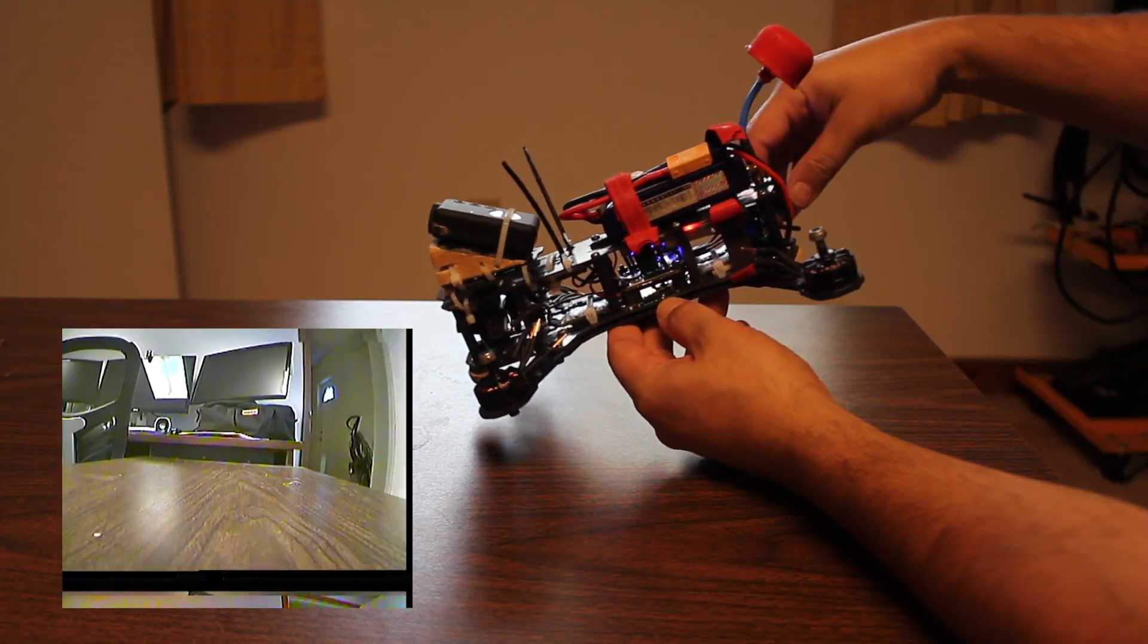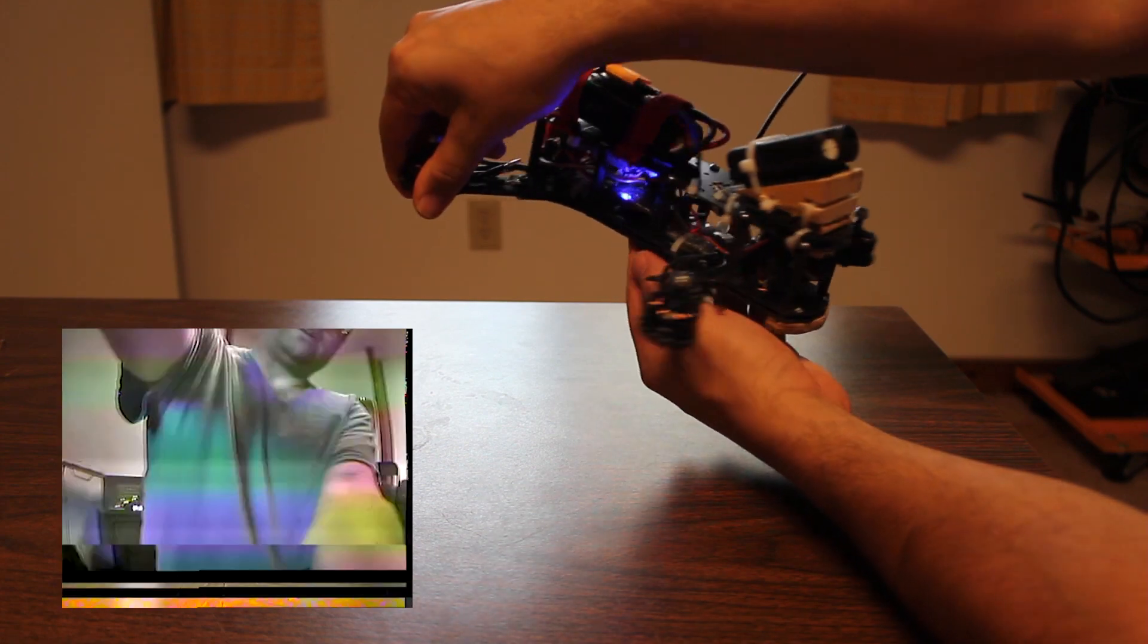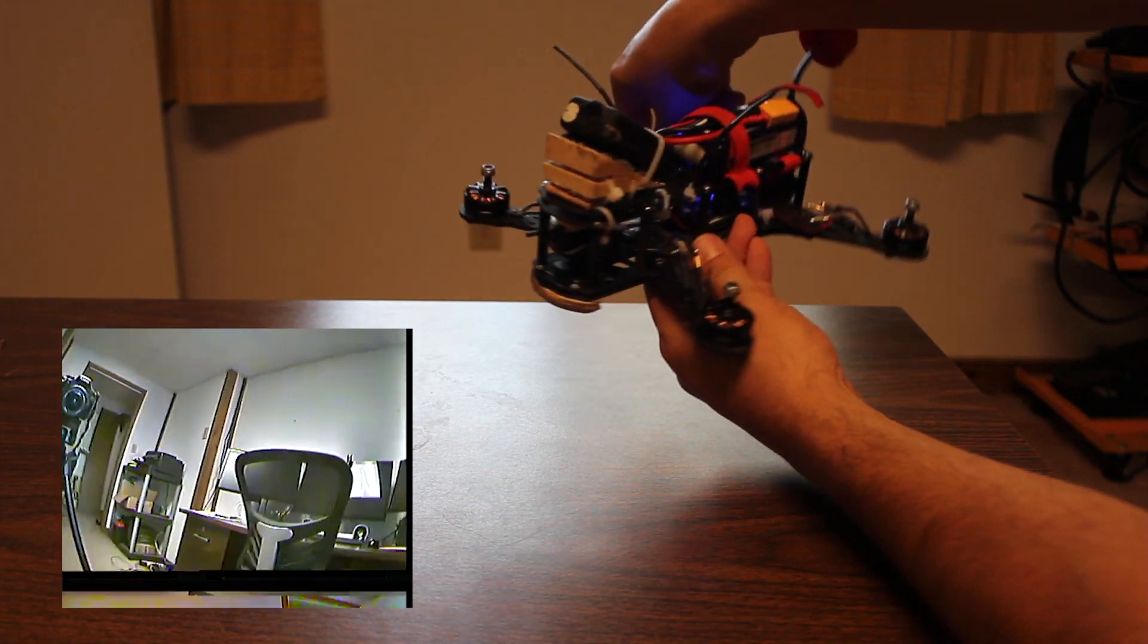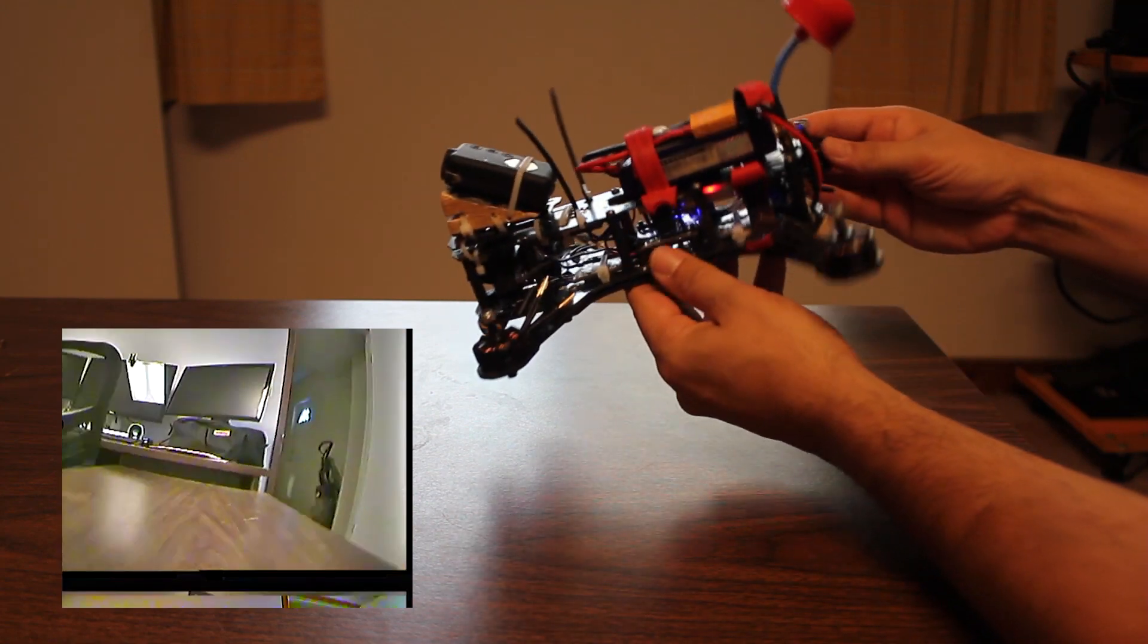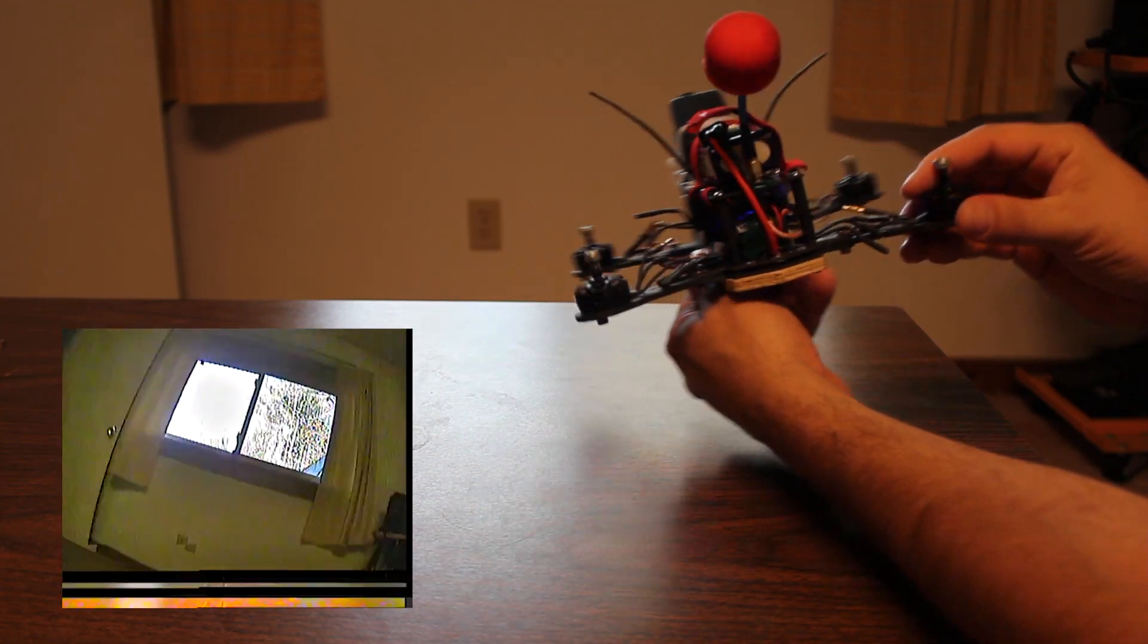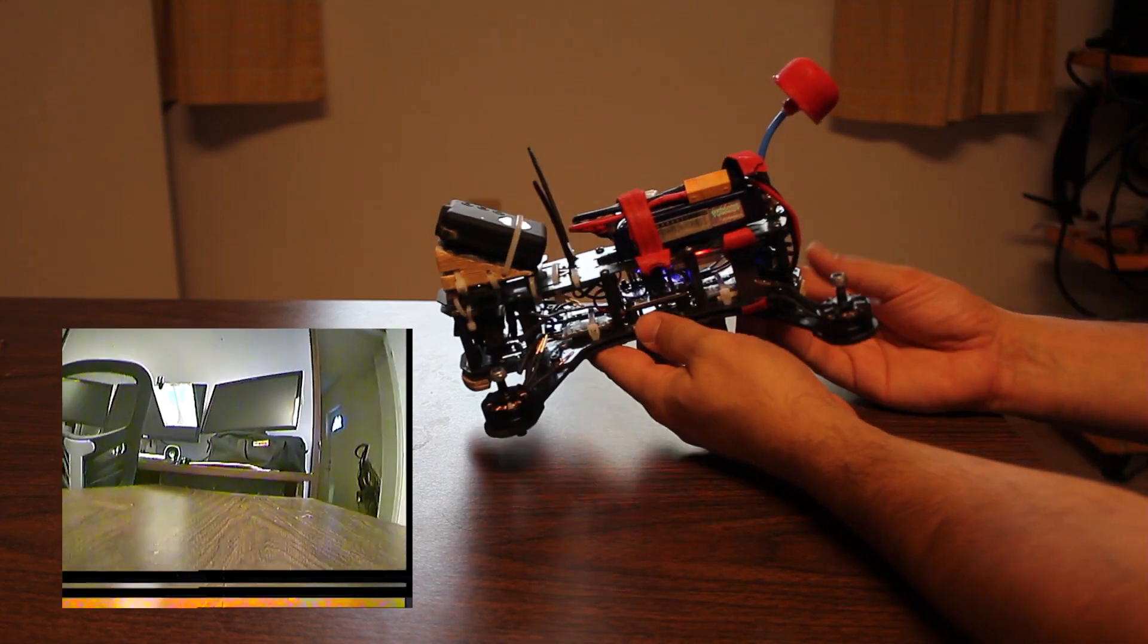Once you get to the point where you can reliably just sort of have the copter do a flat turn like that, in other words you're yawing at a constant rate and the horizon is remaining level, you've got just enough roll in to compensate for the tendency of the copter to roll out of the turn.